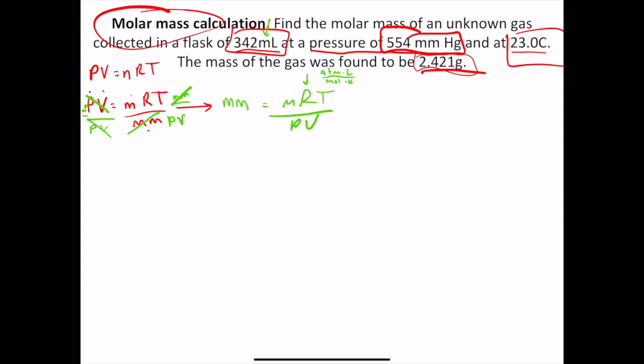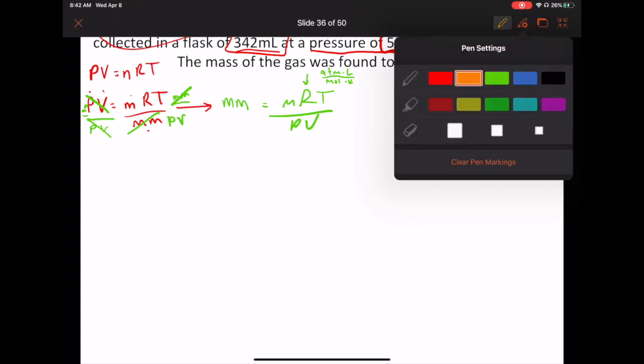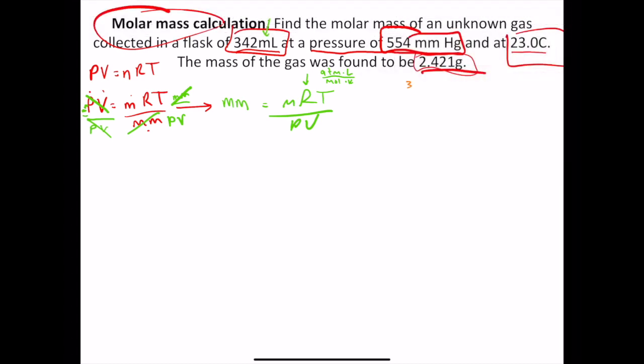So first thing I'm going to convert is the milliliters. So 342 milliliters. We need to get this into liters. So 1,000 milliliters on the bottom. All right. When we divide, we'll get 0.342 liters.